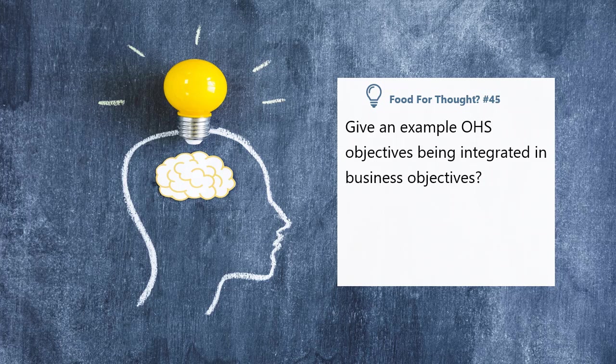Give an example of OHS objectives being integrated into business objectives. Business objectives are mostly financial, so any OHS objective which creates efficiency in OHS processes shall be considered integrated with the business objective. For example, the OHS training budget can be reduced by switching from external third-party training to internal training, or reducing OHS documentation size without reducing the effectiveness of the OHS management system will save productive man-hours for the organization.